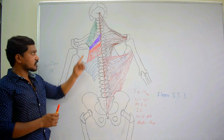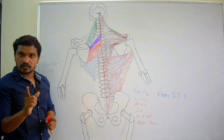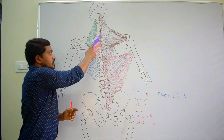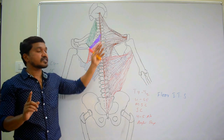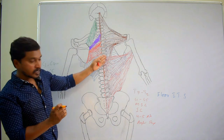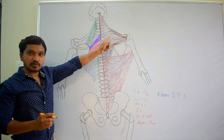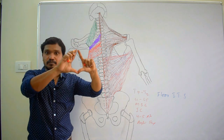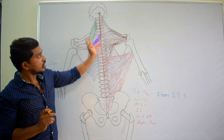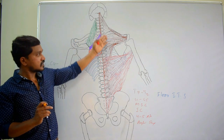The action of rhomboid major and minor: when they contract, the scapula is retracted backwards, along with middle fibers of trapezius. These three muscles can only be seen when you remove the trapezius muscle. Trapezius overlaps them from above; when you cut and reflect trapezius laterally, then only you can see these second layer muscles. Trapezius also overlaps the upper part of latissimus dorsi. These are first layer and second layer muscles.